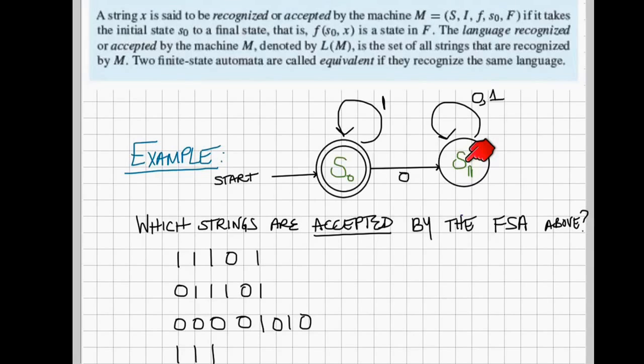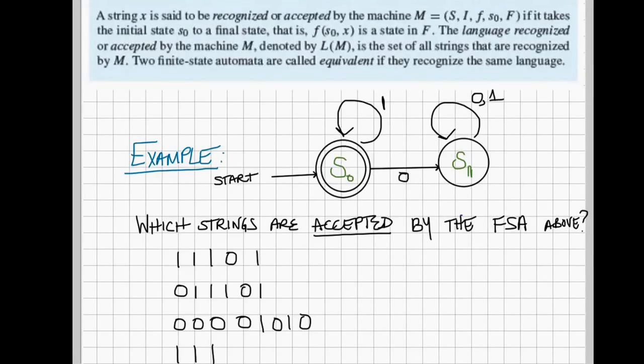So the first string, 11101 is rejected. Why don't you take a minute, pause for a second, and work through the three remaining strings.